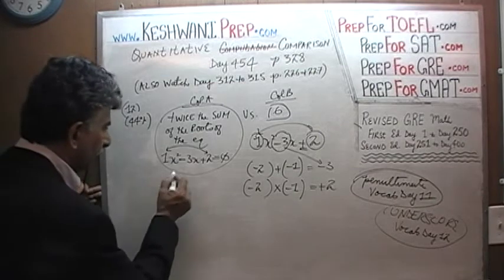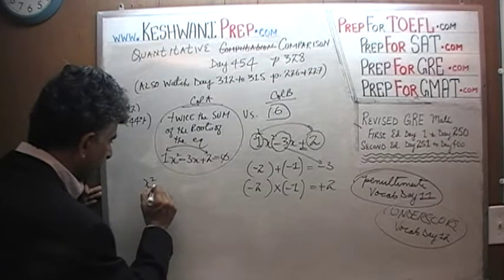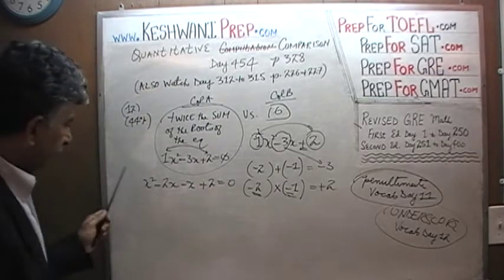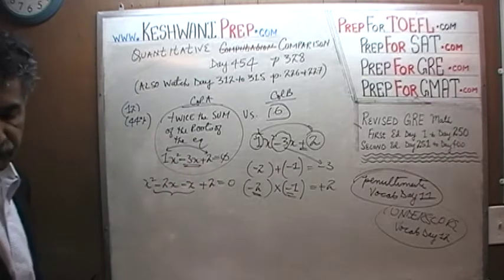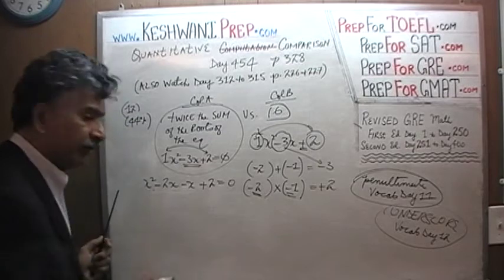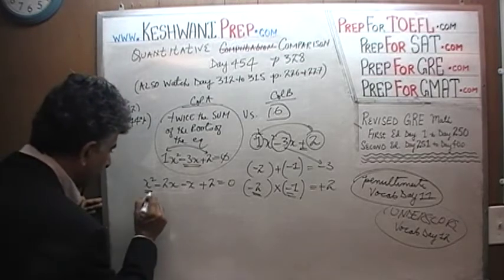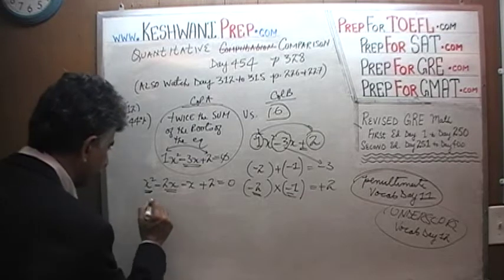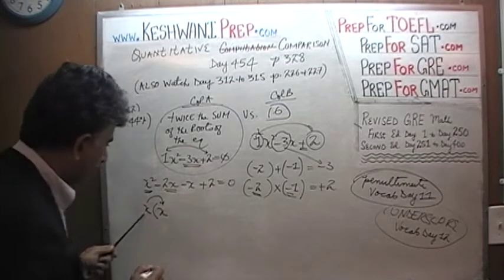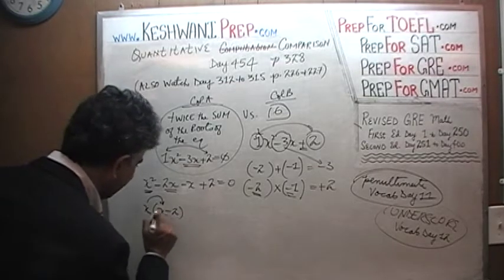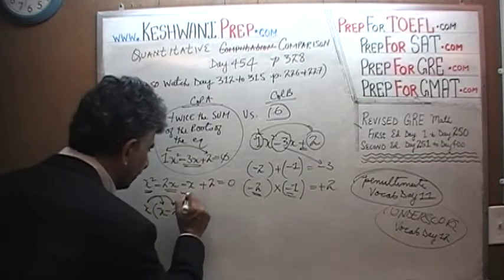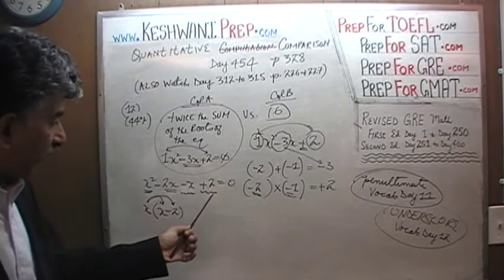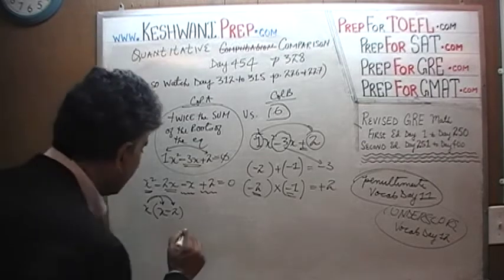Now we do the factorization. We write x squared minus 3x plus 2 as x squared minus 2x minus x plus 2 equals zero. Minus 2x and minus x give us back the negative 3x. Now we take out common factors. From the first two terms, x squared and negative 2x, the common factor is x, leaving us with x times (x minus 2). For the last two terms, negative x and positive 2 have no common factor other than negative 1.